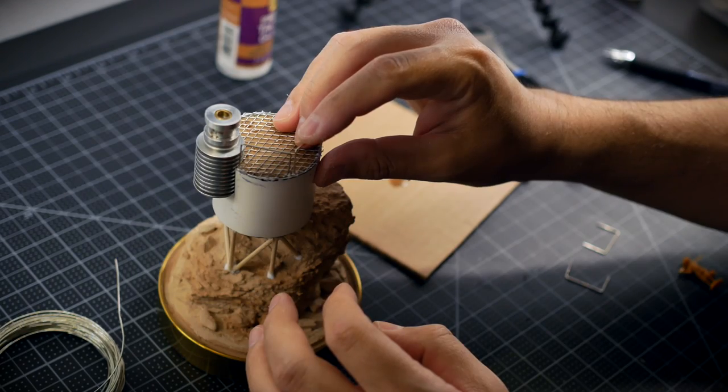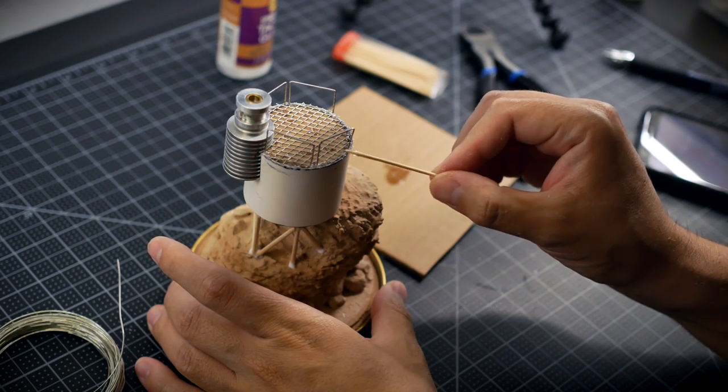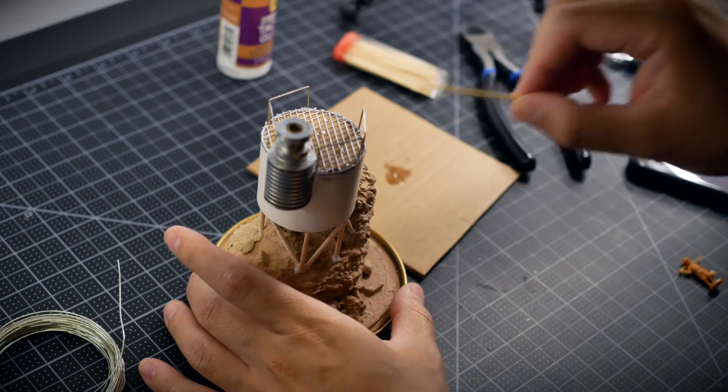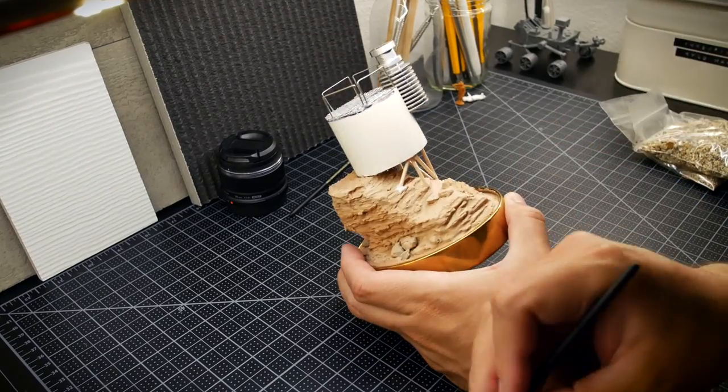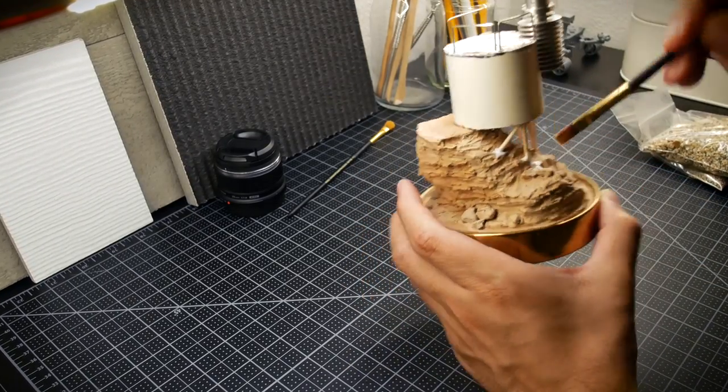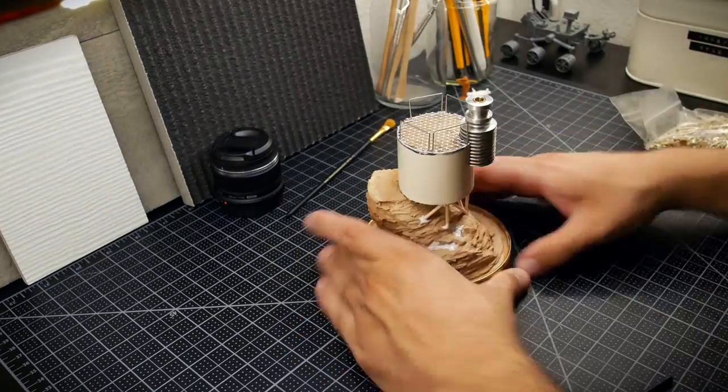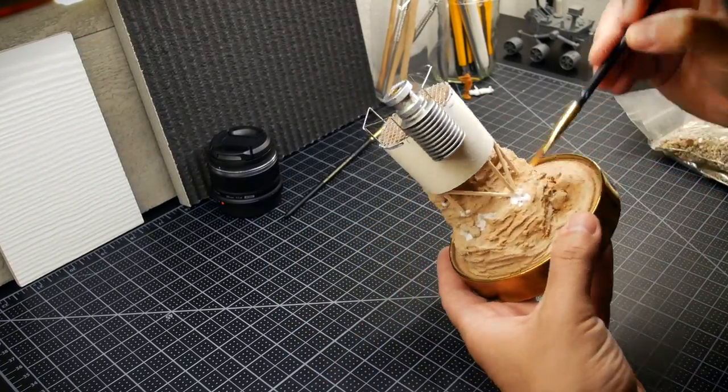Steel wire was used to create railings. These were glued down using superglue. Mod podge was brushed on to certain portions of the landscape. I'm adding it to locations where rocks, gravel, and sand would naturally accumulate.